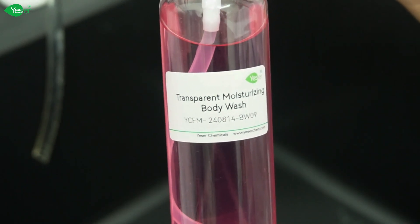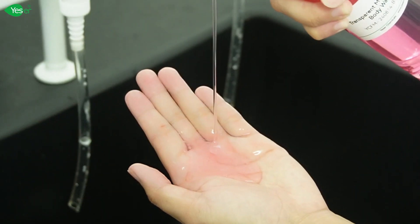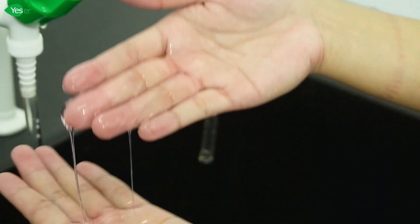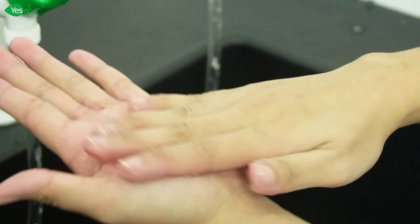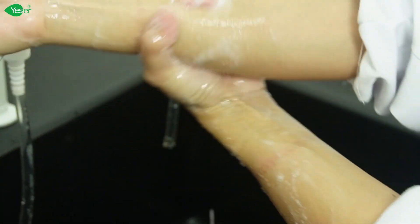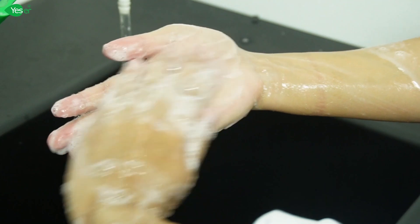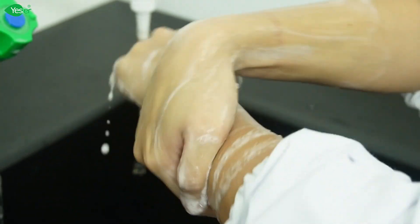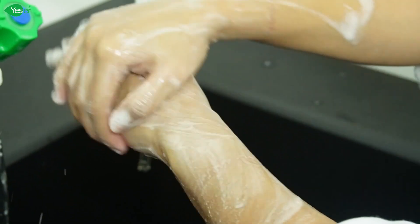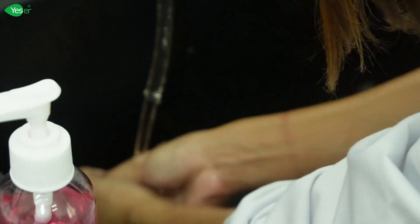Now let's put our transparent moisturizing body wash to the test and see how it performs on your skin. As you can see, it's crystal clear, a sign of its purity and gentle formulation. You notice how it easily foams up. This is due to our carefully balanced surfactant system, including the PEG7 glyceryl cocoate, which not only cleanses but also locks in moisture. PEG7 glyceryl cocoate acts as a softening agent, ensuring that your skin feels nourished and hydrated, not stripped or dry. Our formula rinses clean without leaving any residue thanks to the gentle yet effective cleansing power of PEG7.